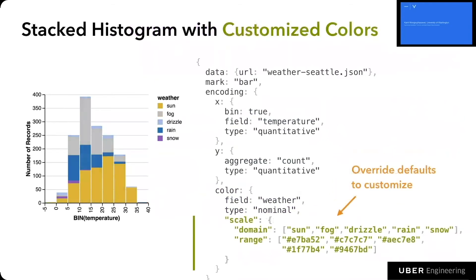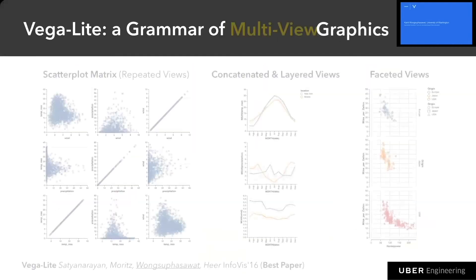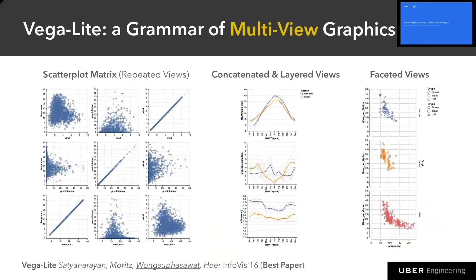If you still want to customize the plot — for example, customizing colors to make sunny bars yellow — you can overwrite default scale properties. Using this kind of syntax, we can create and recommend a variety of charts. In the latest version of VegaLite, we also extend it with an algebra for composing multi-view graphics using operators like repeat to create a scatterplot matrix, using concatenation, layering, or faceting to create small multiples. We also present building blocks to simplify interactions on these composed views, all available in a single unified language.